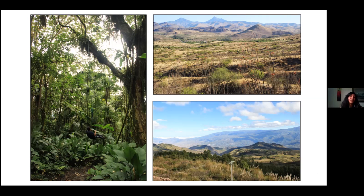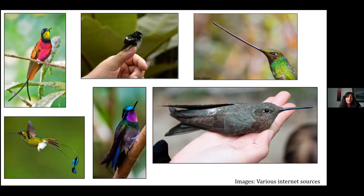Hummingbirds are able to live in a wide variety of habitats: from the cloud forests in South America, to deserts in Arizona, and the high elevation Andes all over South America. They also come up further north all the way to Alaska sometimes in the summer. They have a wide distribution of body sizes, colors, and bill lengths — they're just incredible in their diversity. There are over 330 species of hummingbirds, from the tiny little bee hummingbird to the giant hummingbird and the sword-billed hummingbird, distributed all over North and South America.